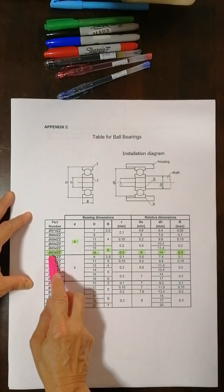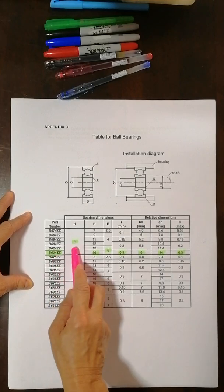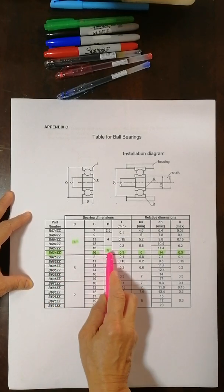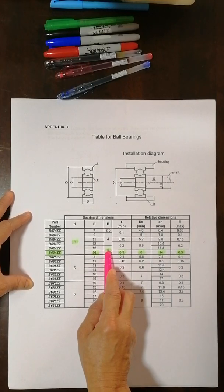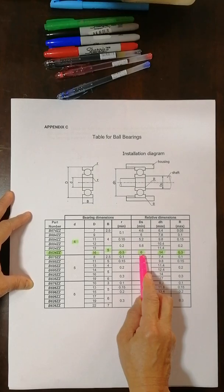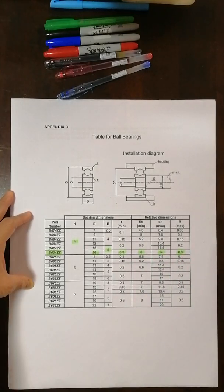Let's highlight it first. 634ZZ. ID is 4, outside diameter is 16, the width is 5, minimum radius for the bearing is 0.3, and then DS 6, 14 and 0.3.